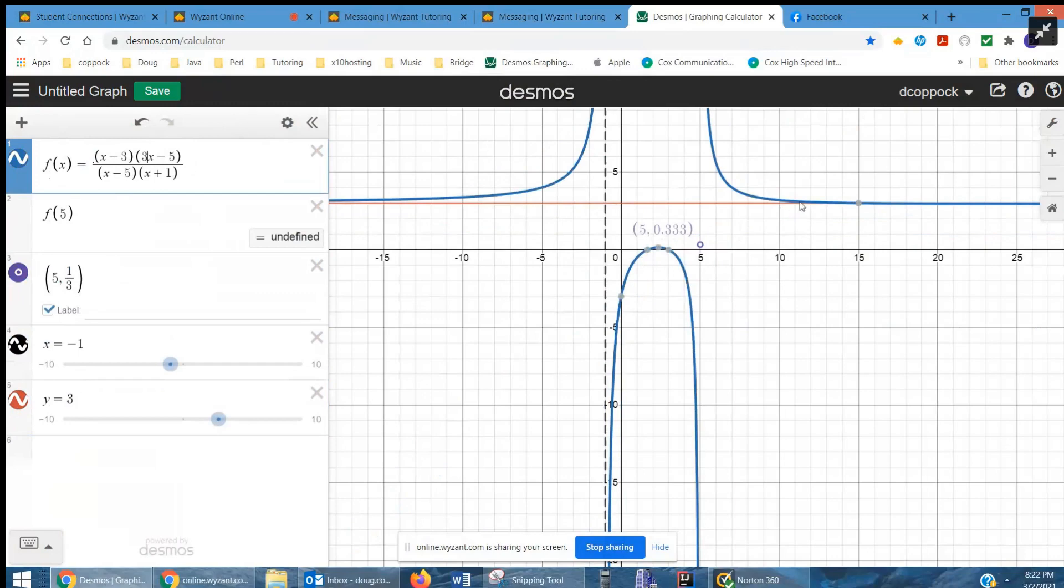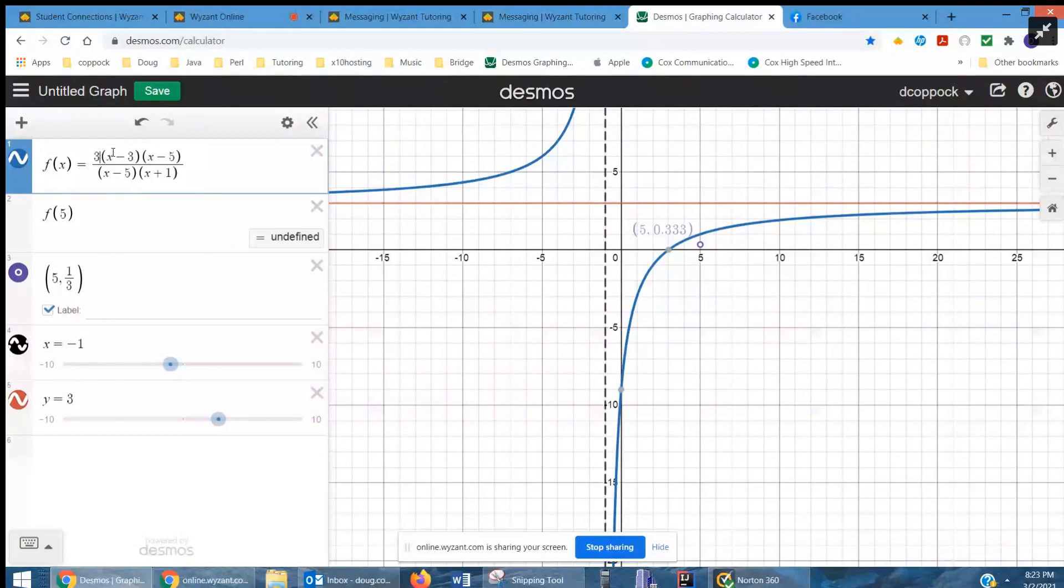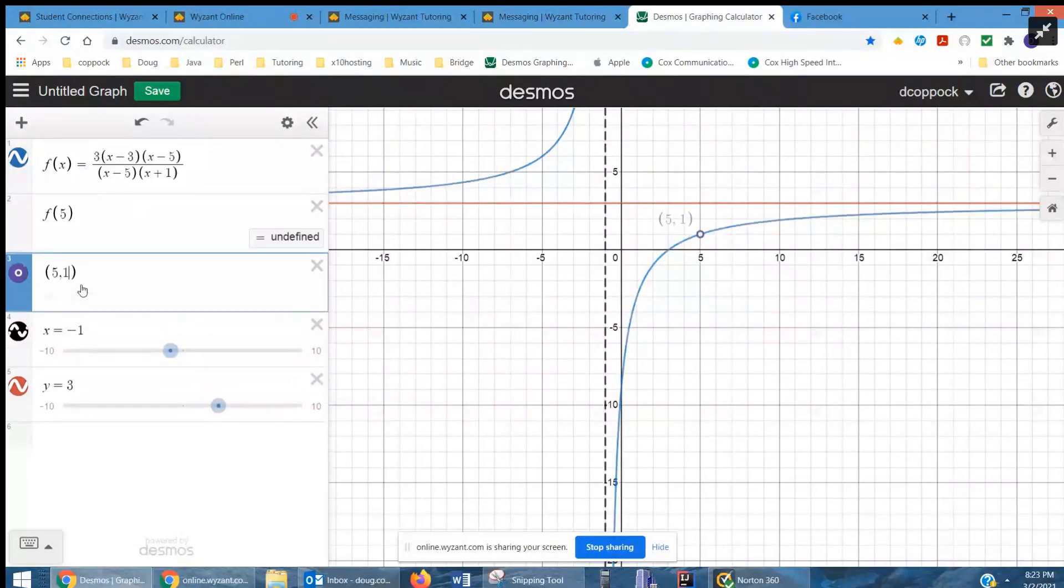Yeah, it changes the way the function looks quite a bit. But I'll put it out here. And that changes where the hole is, because I've now got 3 times 2 is 6 over 6, or 1. And there's the hole.